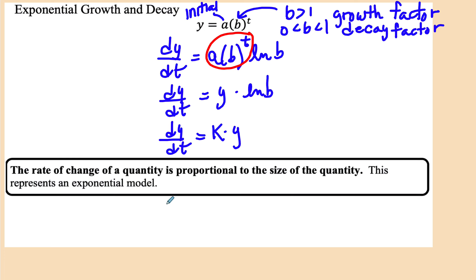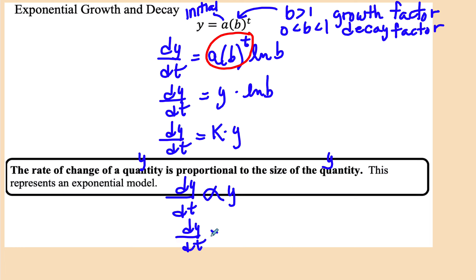This represents the differential equation of an exponential growth or decay model. An exponential growth or decay model says: the rate of change of a quantity is proportional to the size of the quantity. If the quantity is y, then its rate of change is proportional to y itself. To change it to an equation, we introduce a constant of proportionality k.